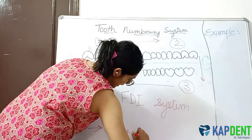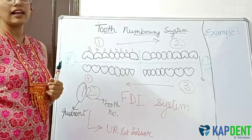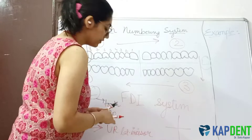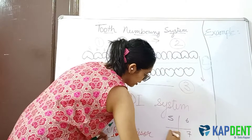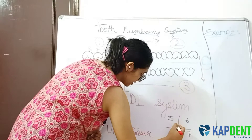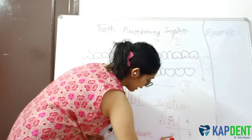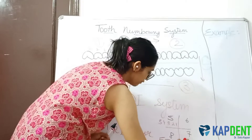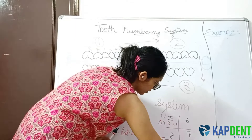In the case of primary dentition in the FDI system, no alphabets are used. Only the first digit — the quadrant number — is changed. For primary teeth, the quadrants are numbered from 5 to 8, while the teeth are still numbered 1 through 5 within each quadrant. For example, '5, 5' refers to the primary upper right second molar.